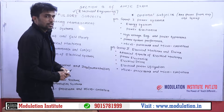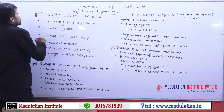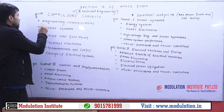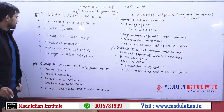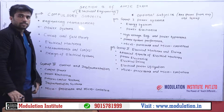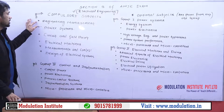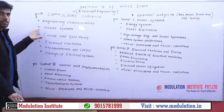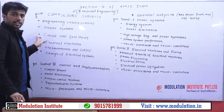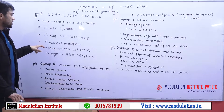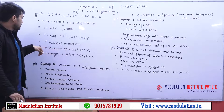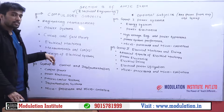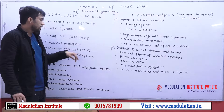Within this electrical engineering branch, we are having six subjects that are compulsory. The first one is engineering management, the second one is power system, the third one is circuit and field theory, the fourth one is electrical machines, and the fifth is measurement and control, and the last compulsory subject is design of electrical systems.